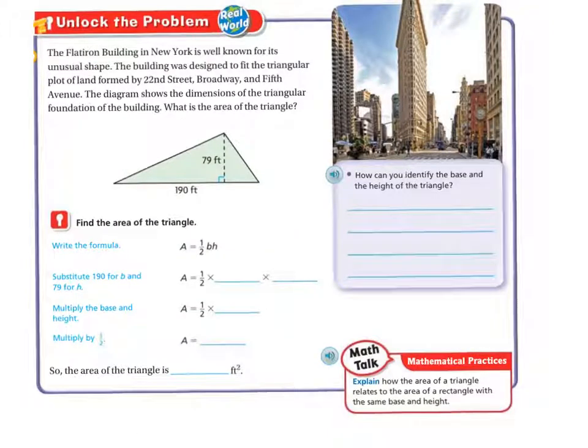So first we're going to write the formula, which is area equals half the base times height. And now we're going to substitute the 190 for the B, because there's my base, 190. And then we're going to substitute the 79 for the H.